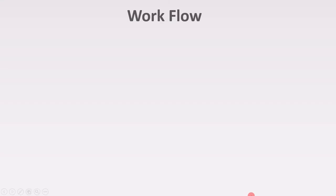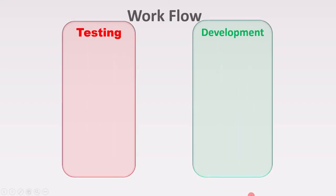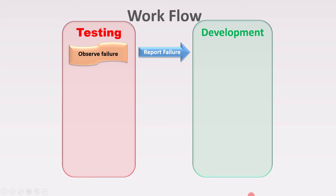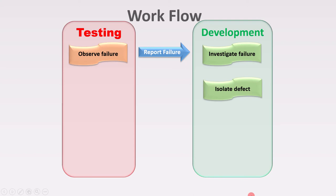Now we will discuss how testers and developers work with respect to the defect cycle. First, the tester finds the defects. Then the found defect is reported to the development team. After getting the defect report, the development team starts investigating the failure. While investigating the failure, the developer isolates the defect from the rest of the software.